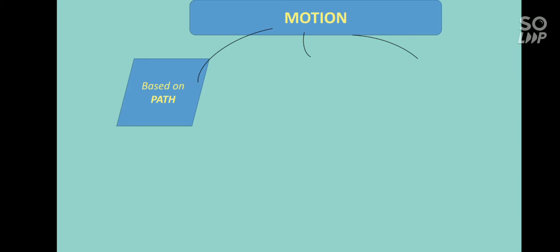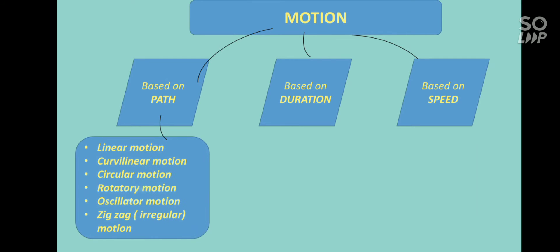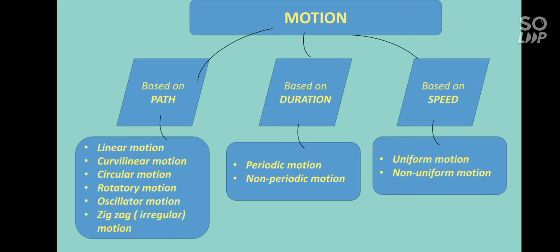Motion is broadly classified into three categories: first, based on path; next, based on duration; and next, based on speed. Based on path, motion is classified into linear motion, curvilinear motion, circular motion, rotatory motion, oscillatory motion, and zigzag motion. Based on duration it is classified into periodic and non-periodic motion, and based on speed into uniform and non-uniform motion.